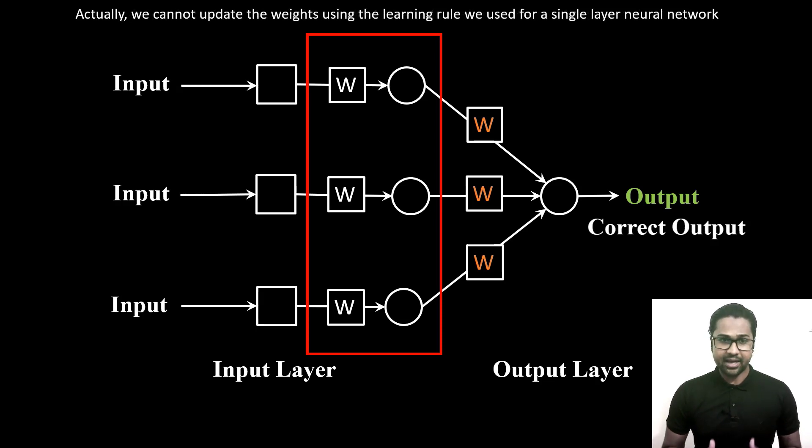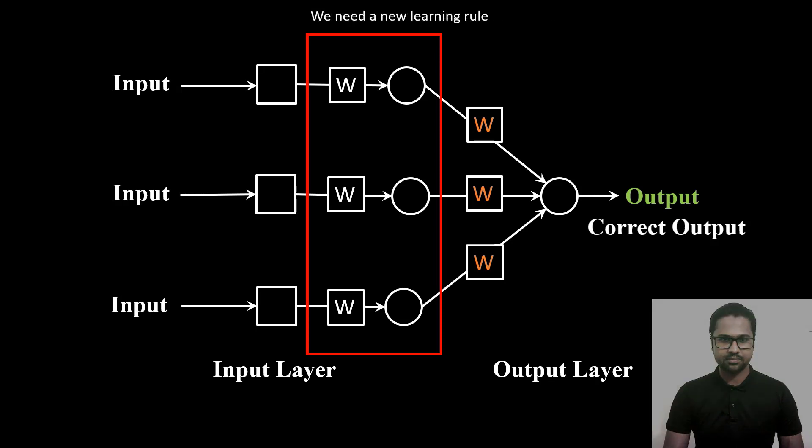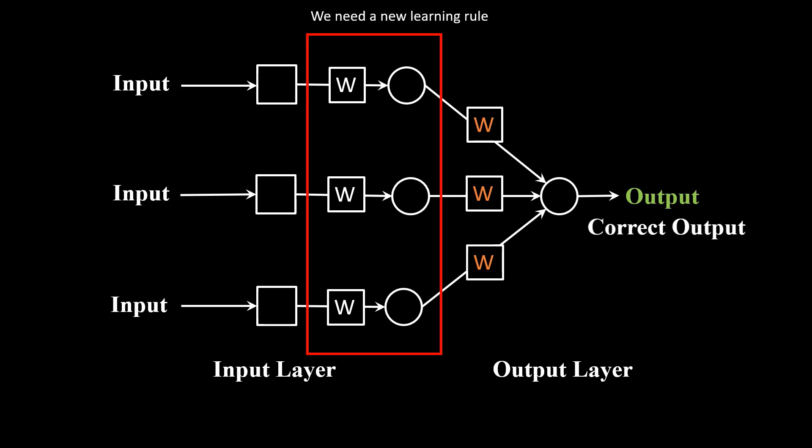And actually, we cannot update the weights using the learning rule we used for a single-layer neural network. We need a new learning rule, and that is the backpropagation algorithm.